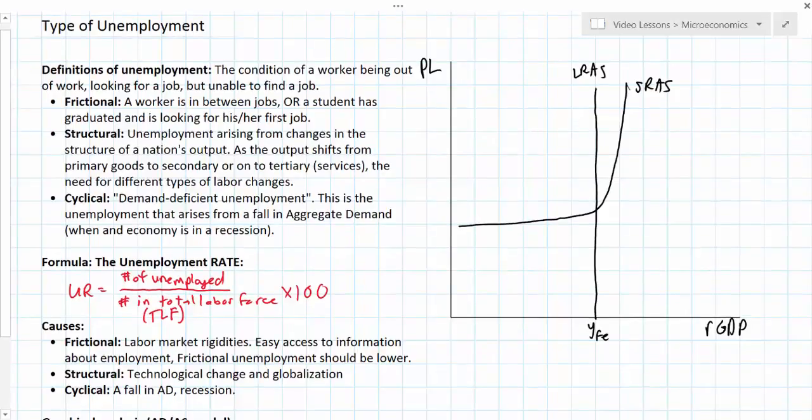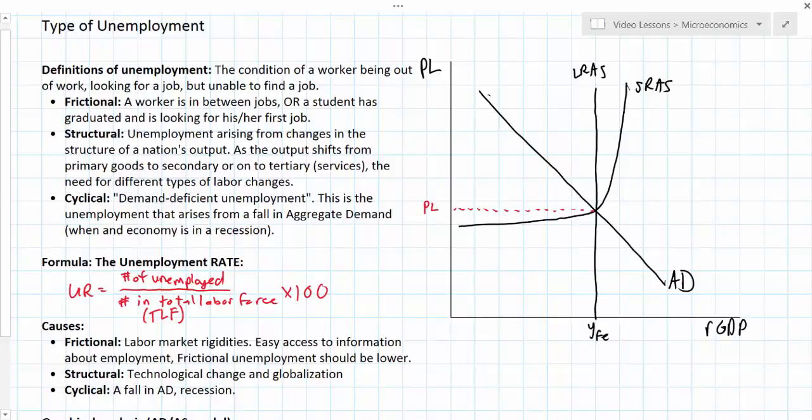Finally I'll draw my aggregate demand curve. I'm going to assume that this economy is currently at equilibrium at its full employment level with inflation represented by PLE.